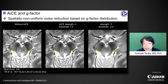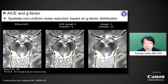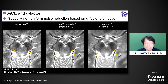AICE noise reduction with g-factor consideration can bring satisfactory results in visualization of the nigrosome in the substantia nigra. The nigrosome is a cluster of dopaminergic neurons within the substantia nigra, visualized as a relatively high signal area. Volume loss of the nigrosome is important diagnostic information in cases with Parkinson's disease. Since nigrosomes are located in the deep part of the brain where SNR is insufficient in parallel imaging, by applying adequate AICE strength with g-factor consideration, nigrosomes are satisfactorily visualized.